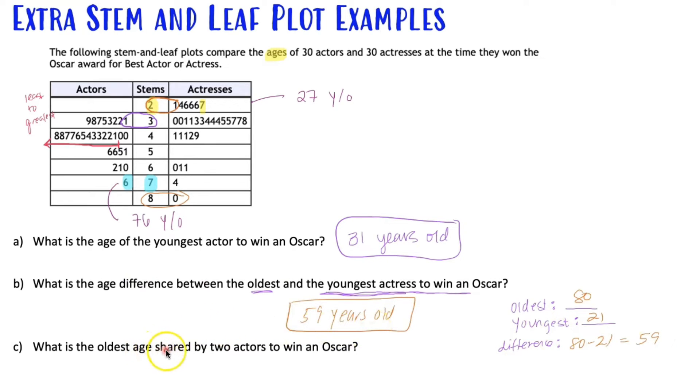And what's the oldest age shared by two actors to win the Oscar? So that means I'm coming over to the actor and I want to see two of the same repeated numbers. So there's some repeated numbers, but I want the oldest. So I'm looking for, oh, there's repeated, there's repeated. So 48 might seem to be the oldest, but then if you keep going, I see, I see 50, 56. Looks like it's the oldest. So the oldest age shared by two actors is 56 years old.